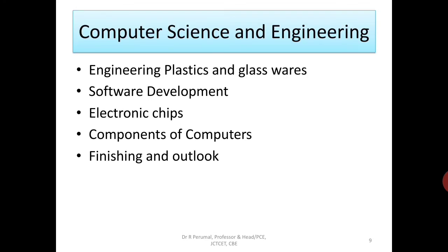In computer science and engineering, all computers are made up of plastics and glassware, so engineering plastics and glassware play a major role. In software development, if you want to write software for a chemical product or chemical plant, you should know the fundamentals of chemistry. Electronic chips and components of computers are made out of chemicals, and the finishing and outlook of computers is based on surface chemistry.